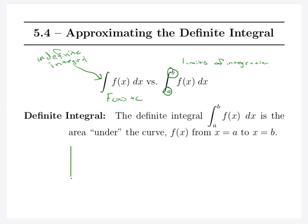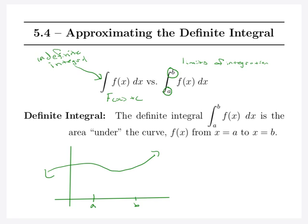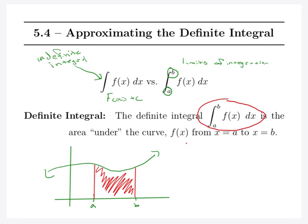We talk about area under the curve a lot, so let me try and draw out what I mean. If this is our axes and we've got our regular standard function, we have two x values. The main idea is that this integral is really the area between our curve and our x-axis. These definite integrals are just going to be values because they represent sizes of shapes.